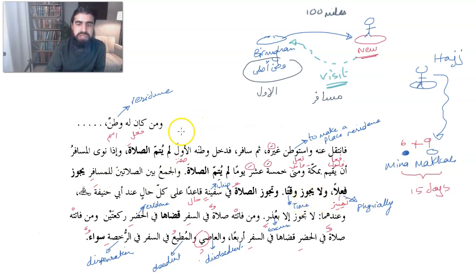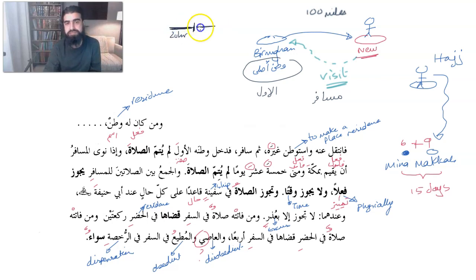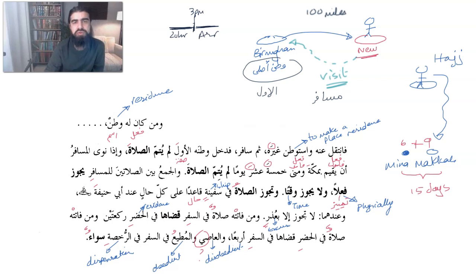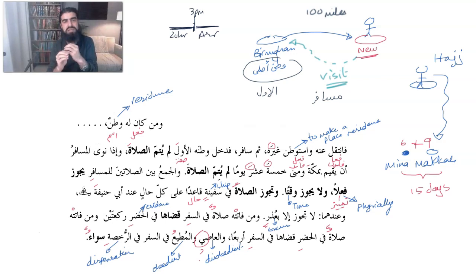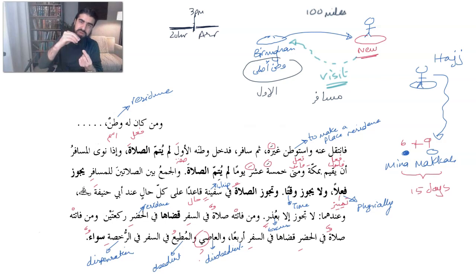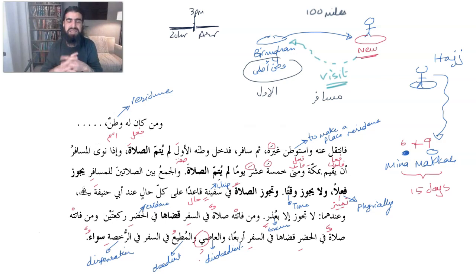There is the idea of combining salats — Jama'. You've probably heard of this: combining Dhuhr and Asr, Maghrib and Isha. So the question is: can a person pray Dhuhr and Asr in one salat time? This is called Jama' Waqti — in one waqt you combine two salats. And Jama' Fi'li means in each time you pray the salat at its allocated time but you pray them so close together it's as though you're physically praying them together.